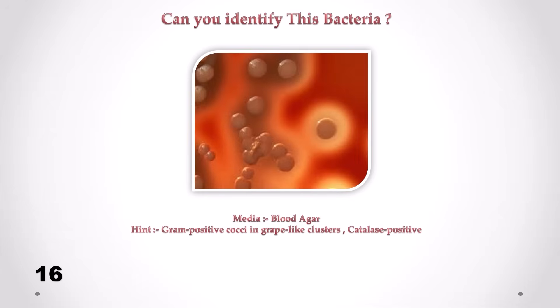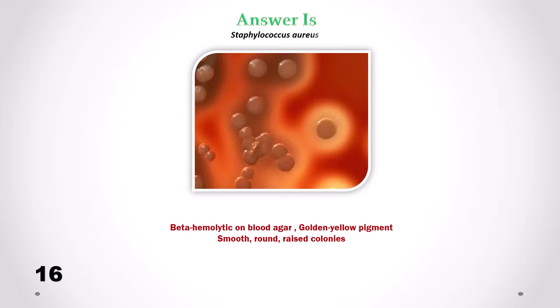Can you identify this bacteria? Correct answer is Staphylococcus aureus. We can see beta-hemolytic on blood agar, golden yellow pigment, smooth round and raised colonies.